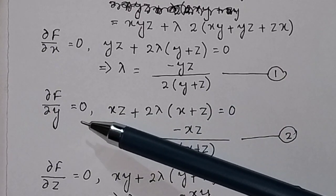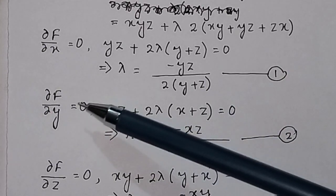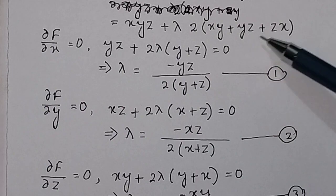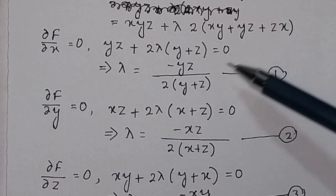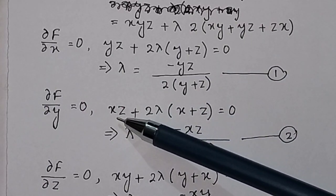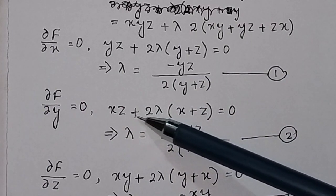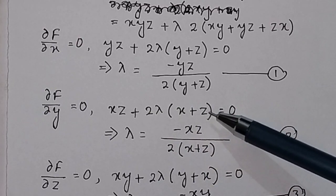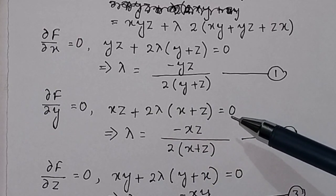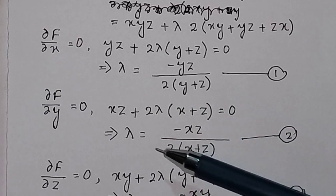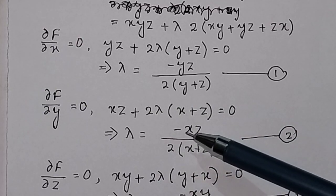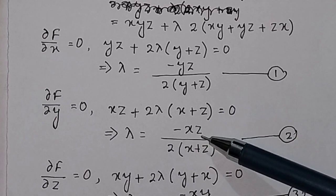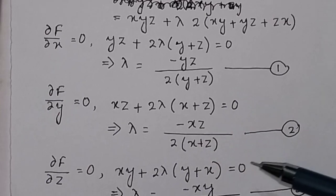Similarly, taking the partial derivative with respect to y and setting it equal to 0 gives: xz + 2λ(x + z) = 0, so λ = −xz / 2(x + z). Call this Equation 2.